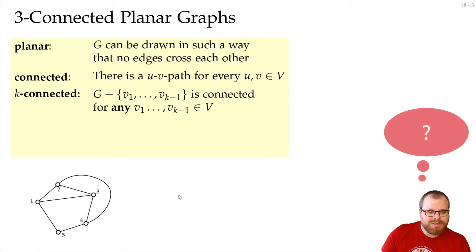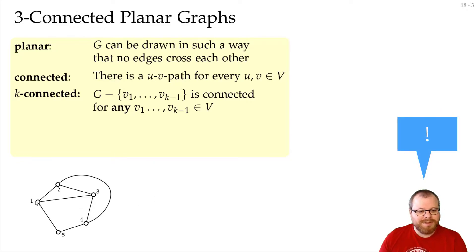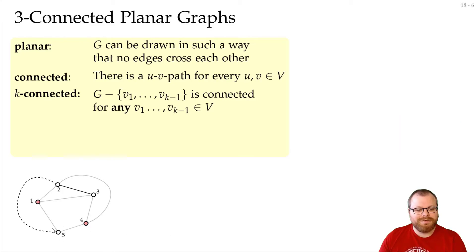Is this graph here a 3-connected graph? No, it is not. If I choose vertices 1 and 4 and remove them, then I get two connected components — one that consists of 2 and 3, and one that consists of 5. However, if I add this additional edge here, then it's one component again, and in fact we have a 3-connected graph.